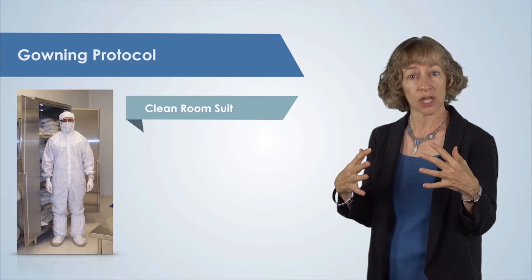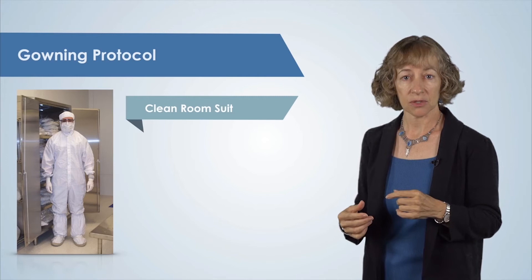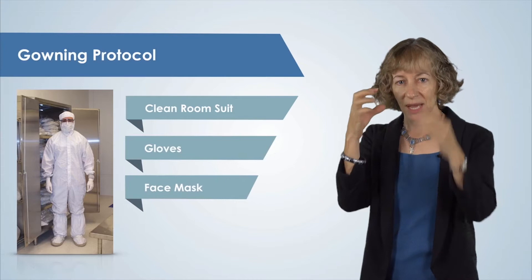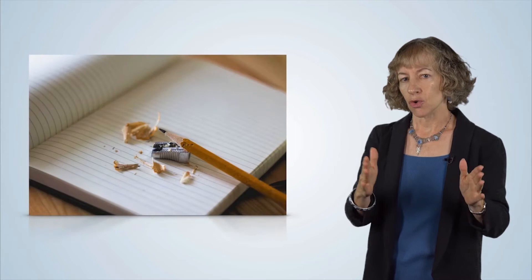Clean room suits cover a person's entire body except for their face and hands. To complete the clean room clothing process, which is called gowning, clean room users put on gloves and a face mask and eye protection. The gloves make a big difference: a moving bare hand produces 200,000 particles per minute, while a gloved hand produces only 150 particles per minute. There are also strict requirements regarding what is allowed in a clean room — for example, normal paper is prohibited because it sheds a lot of particles.